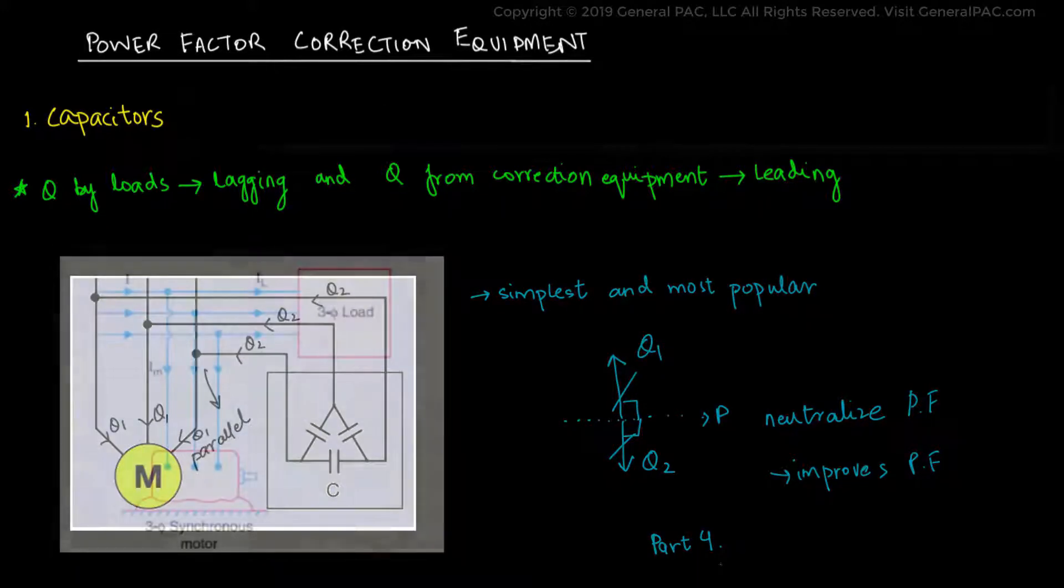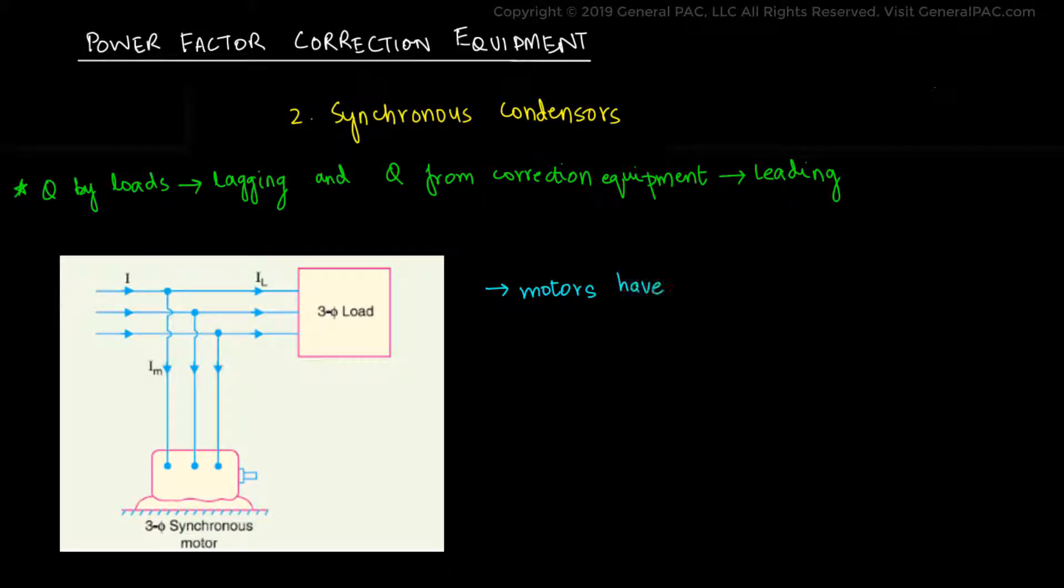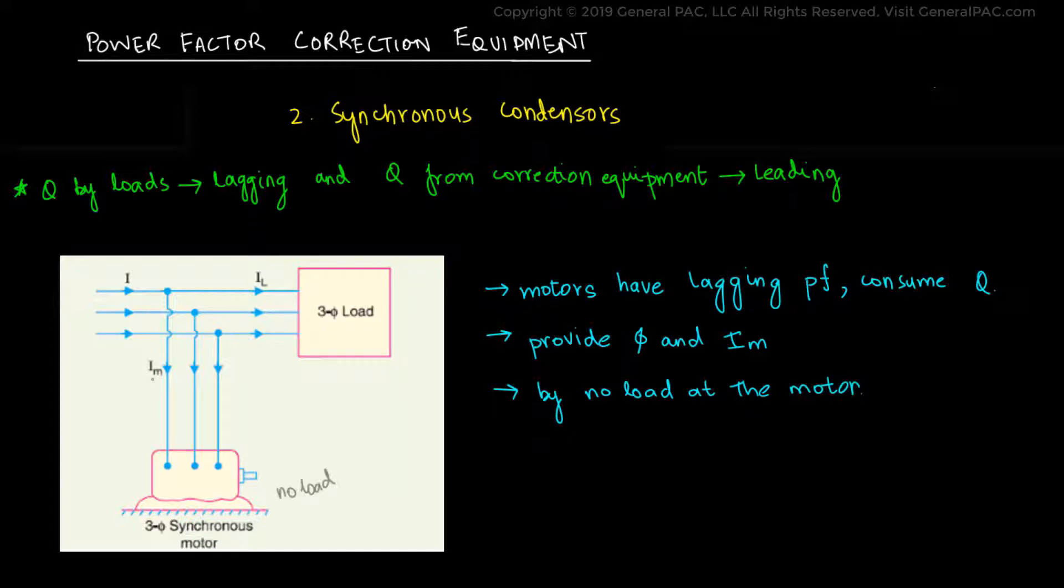The next one is called a synchronous condenser. We already know from the previous parts that motors have lagging power factor and they consume reactive power. But what if we were to provide an additional magnetic flux than necessary? And in addition to that, we remove any loads attached to its shafts. The additional magnetic flux would then cause the motor to start supplying reactive power instead of consuming it as the case originally.